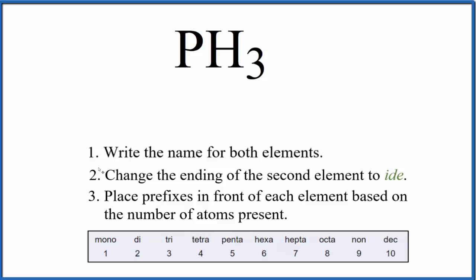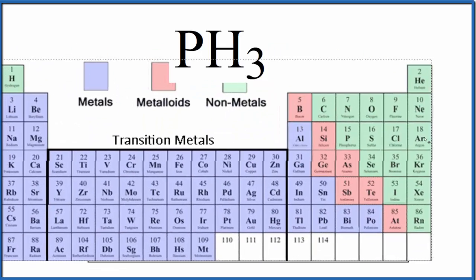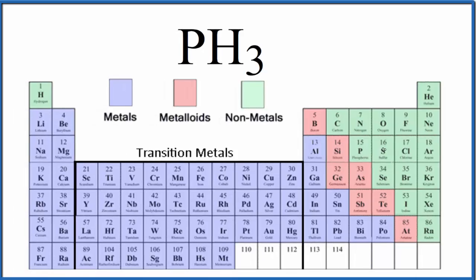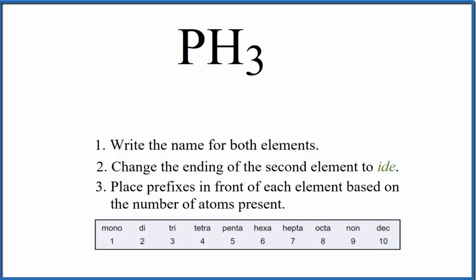First off, we know that we have a molecular compound because we have two nonmetals. If you look at the periodic table here, you'll see phosphorus and then hydrogen. They're both nonmetals, so we have two nonmetals. It's a molecular compound and we'll use the rules right here to write the name.